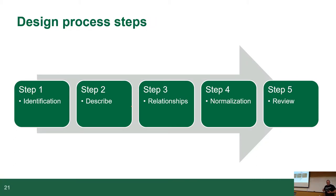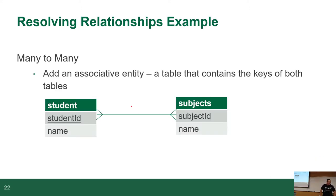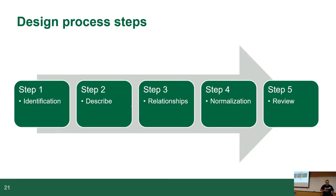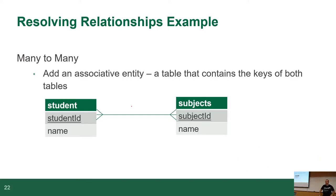The database design process is made up of five steps: identification, describe relationships, normalization, and review. As long as you remember what these steps are, you're good. There might be questions on this topic — how to resolve certain kinds of relationships, with many-to-many being the number one contender for resolving complex relationships.